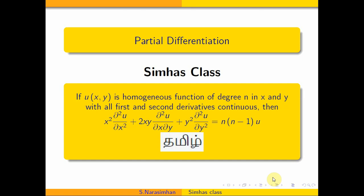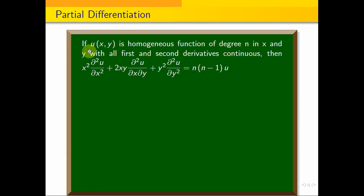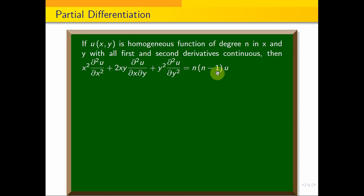Euler's theorem applied to a second order differential equation. Euler's theorem formula: if u is a homogeneous function of degree n in x and y, with all first and second derivatives continuous, then x squared times ∂²u/∂x² plus 2xy times ∂²u/∂x∂y plus y squared times ∂²u/∂y² is equal to n(n−1)u. This is the statement.